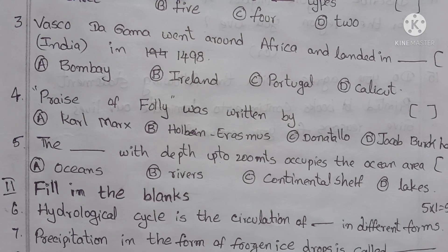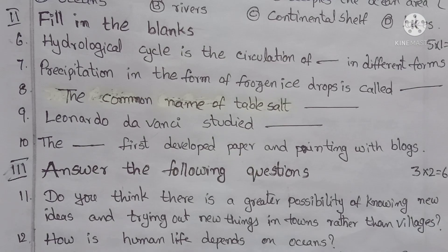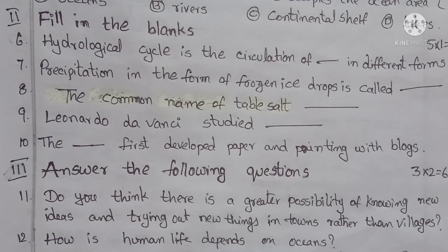Roman numeral two — filling the blanks. Sixth question: hydrological cycle is the circulation of dash in different forms. Seventh question: precipitation in the form of frozen ice drops is called. Eighth question: the common name of table salt. Ninth question: Leonardo da Vinci studied. Tenth question: the dash first developed paper and printing with blocks.